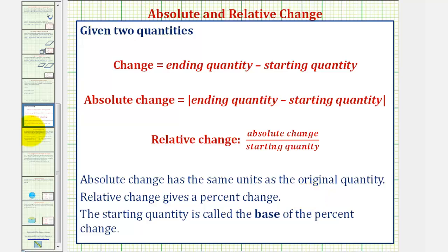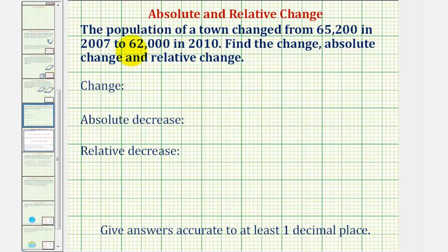So going back to our example, notice how the population does go down from 2007 to 2010. So the change is equal to the ending population of 62,000 people minus the starting population of 65,200 people.